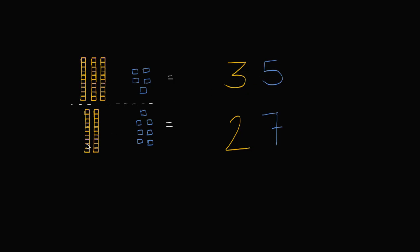The second number here, I have two tens, one, two, and I have one, two, three, four, five, six, seven ones. Two tens and seven ones.